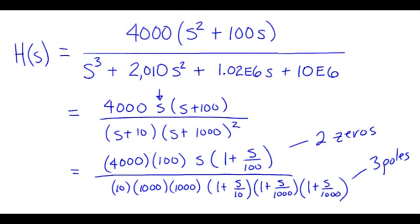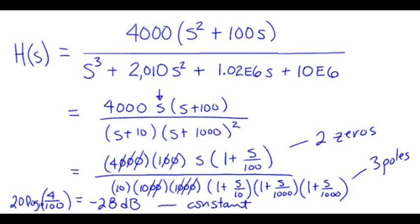To make the magnitude plot, we also need to get any constant offset that might exist. Canceling all the zeros, we are left with four one-hundredths. Converting that into dB, we have minus 28 dB, and that's our constant. So again, three pieces: the constant, any zeros, and any poles.